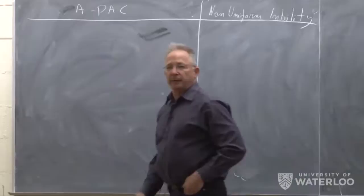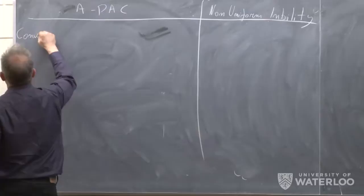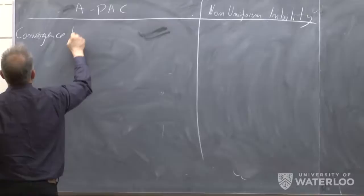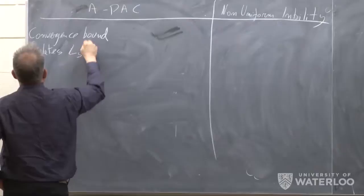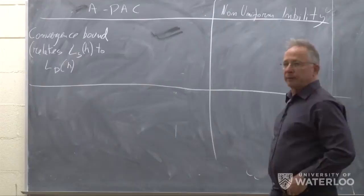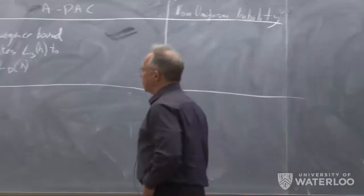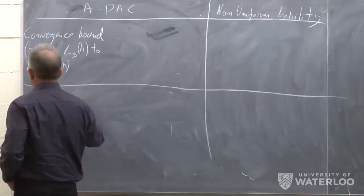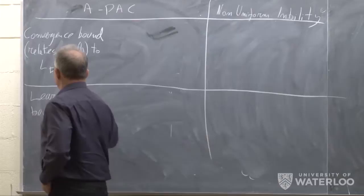When we talk about agnostic PAC, we showed learnability in two steps. The first step was a convergence bound, which relates L_S of H to L_D of H. That was the first step, and then after we had the convergence bound, we were looking at a given algorithm — the ERM learner — and we bounded its error.